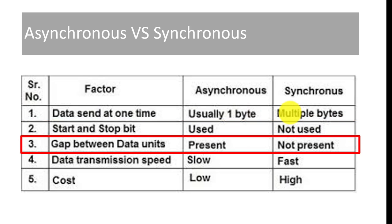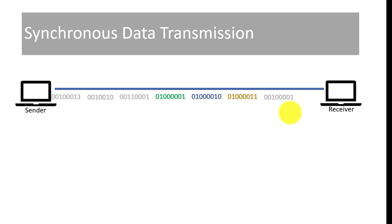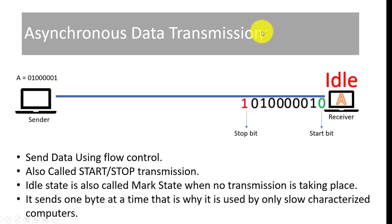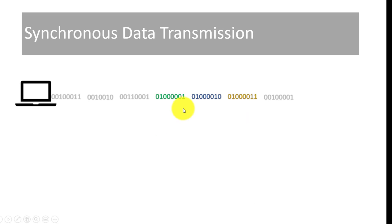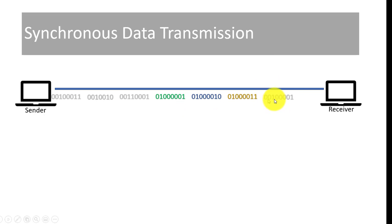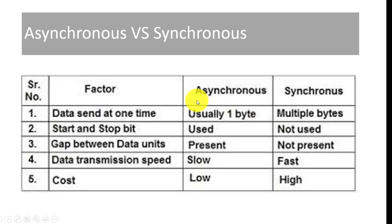Regarding the gap between data units: in asynchronous transmission, one byte leaves the sender and the next byte does not come until the receiver has received the first one, meaning there is a large gap between the two data blocks. In synchronous data transmission, as soon as the first byte arrives, the second byte follows immediately, and then the third, so there is no gap between data blocks in synchronous transmission.